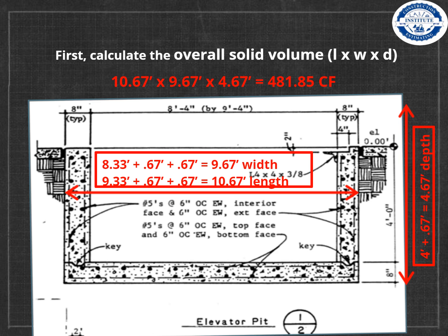Over on the right, you'll find the dimension for the depth. The interior depth is four feet. To that, we need to add the eight-inch depth for the floor at the bottom. Four feet plus 0.67 feet gives you a total depth of 4.67 feet.